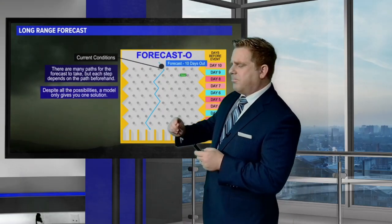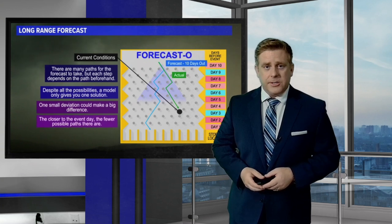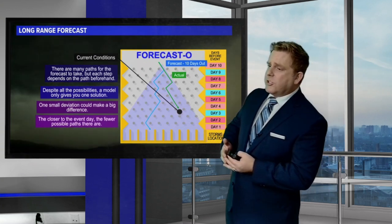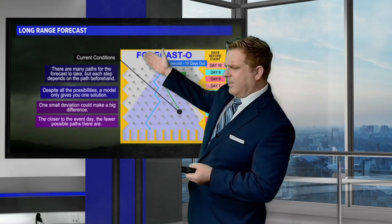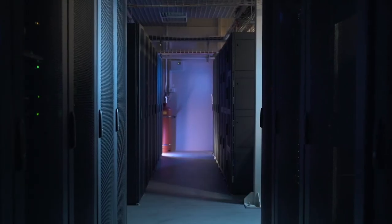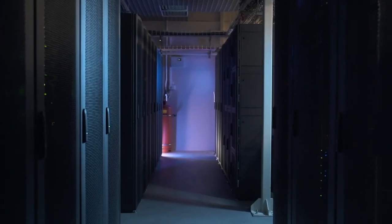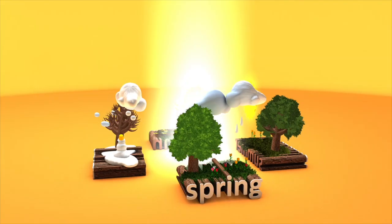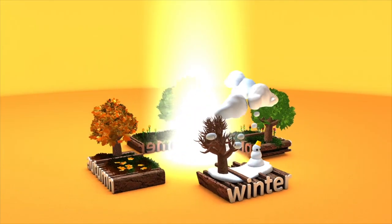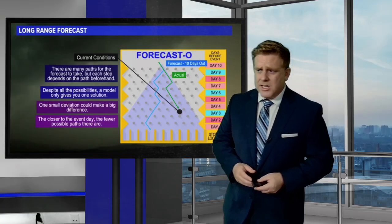But if the guidance is slightly different as far as those computer models are concerned, or the data is slightly different, it can change up the long-range forecast. Now, remember each one of the computer models have different variabilities in them. For example, the Canadian model is good with snow, while the GFS is good with mid-latitudes, and the European is typically better with tropical systems.